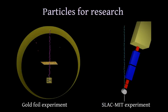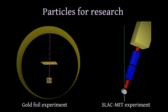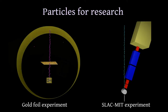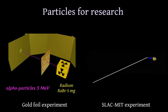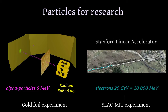as we learn from Rutherford's and SLAC-MIT experiments. To study the detailed structure of the proton we should increase the energy of the particles which interact with the protons. To study the structure of the atom, Rutherford used alpha particles with the energy of 5 mega-electron-volts from radium. To study the structure of the proton, the SLAC-MIT experiment used electrons with the energy of 20 giga-electron-volts from a linear accelerator.